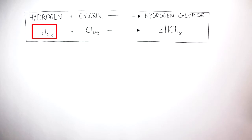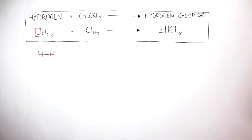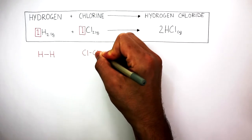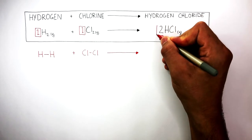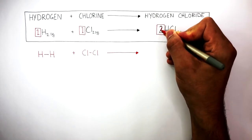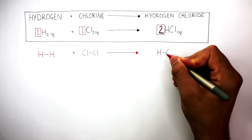Because it only says H₂ with no number in front, this means there is just one hydrogen molecule reacting, represented by this diagram. The same applies to Cl₂ — there's no number before it, so there's only one chlorine molecule reacting. In front of the HCl there's a 2, which tells us there are two hydrogen chloride molecules being produced, represented by these two diagrams.